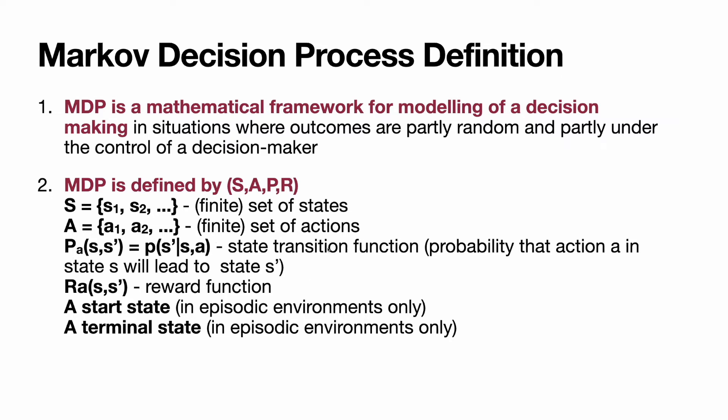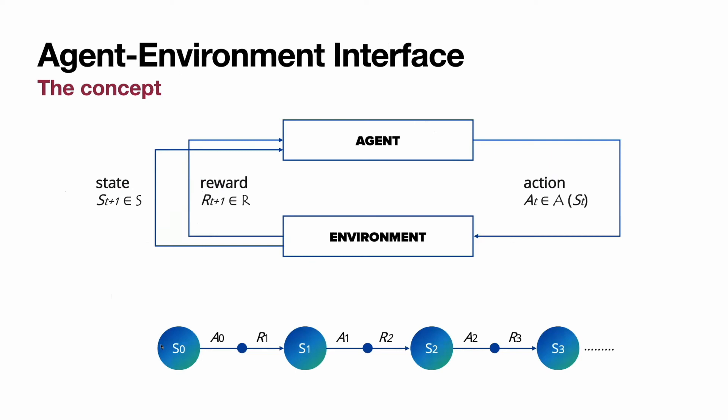P is a transition function. It's also called policy. R is a reward function. A reward function says what reward the agent is granted for moving to a particular state.